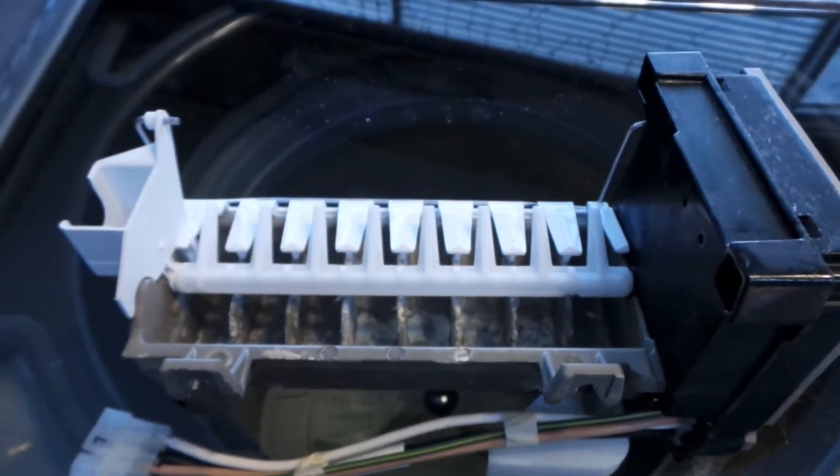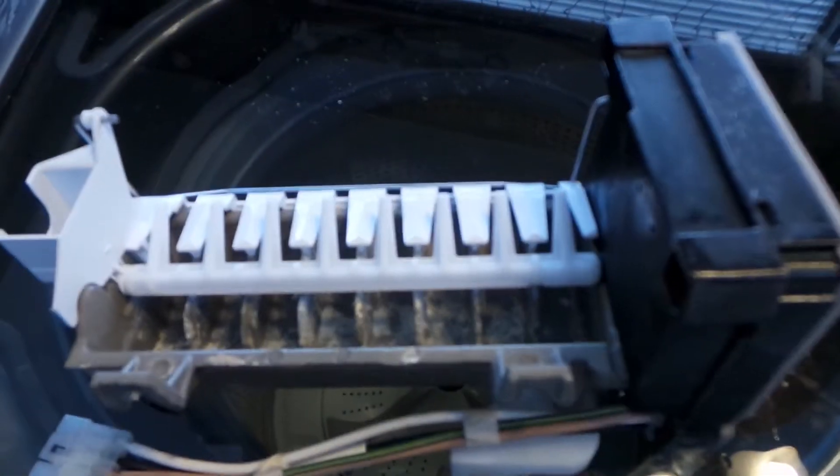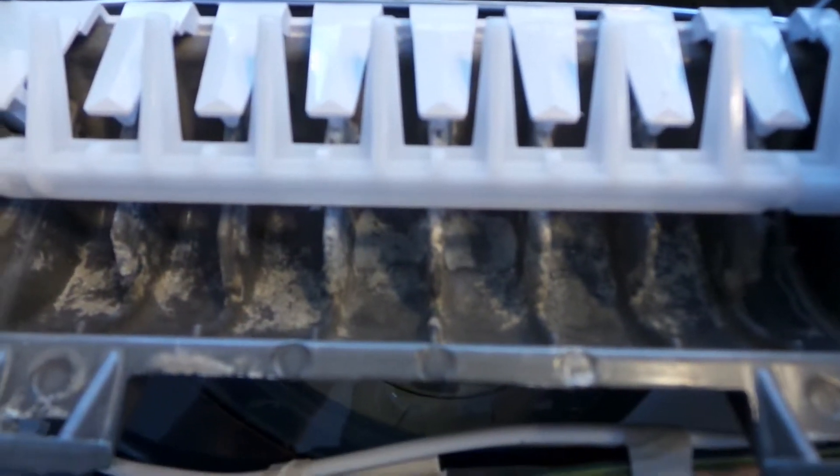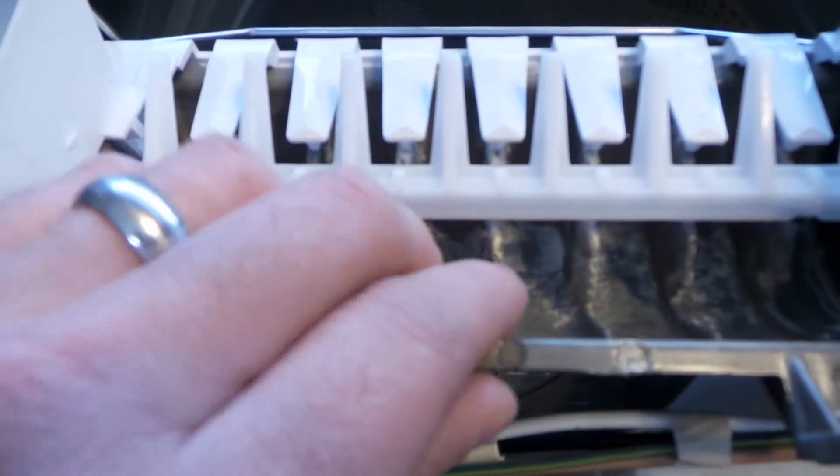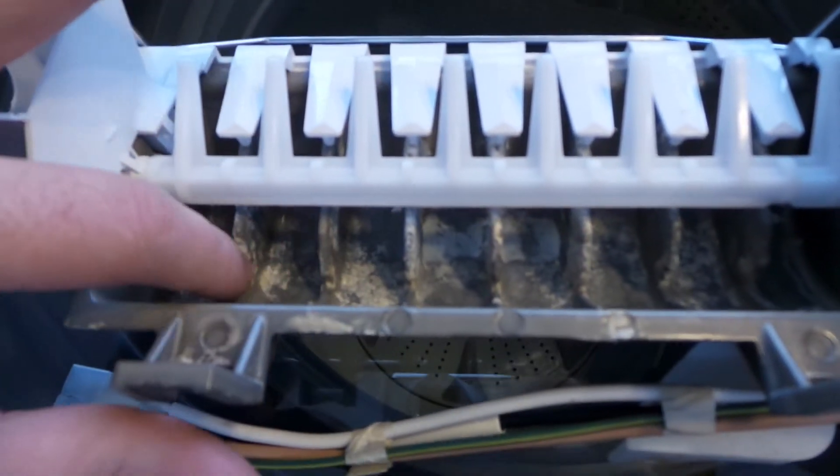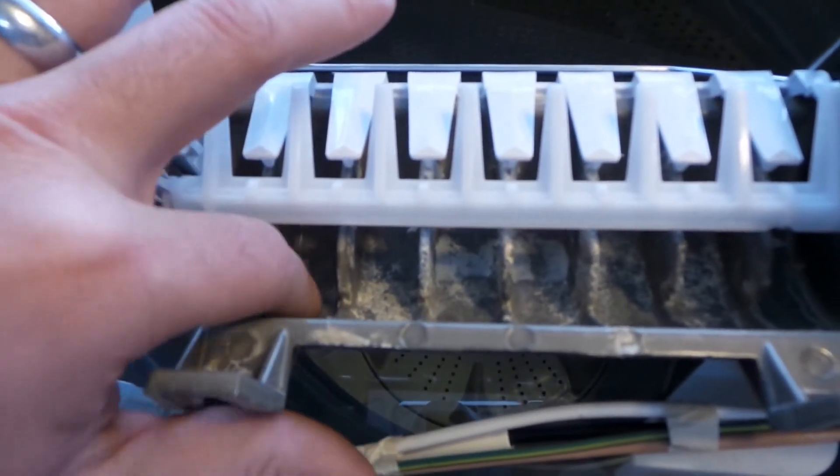I just want to throw a little something in here real quick. When you take this ice maker out, regardless of whether the ice maker itself is bad or not, if you ever take this thing out and you see this little gritty looking stuff down in the bottom of the ice maker mold, it looks kind of like sand or dirt or whatever.